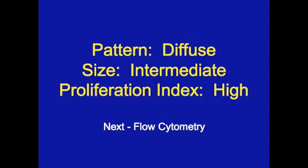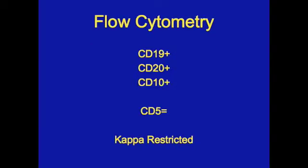Next, let's look at the flow cytometry findings in this case. The flow cytometry showed a kappa-restricted lymphoid process that had variable co-expression of CD19, CD20, and CD10. There was not any co-expression of CD5 detected in the process.